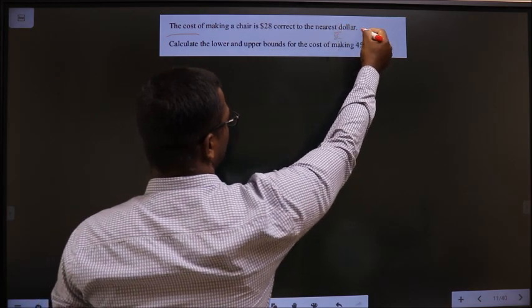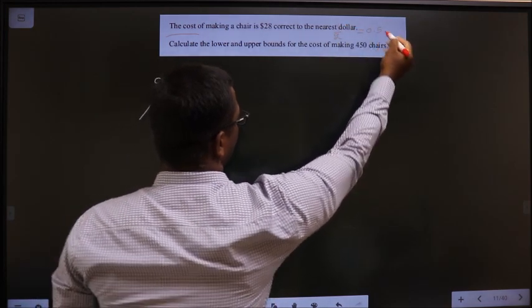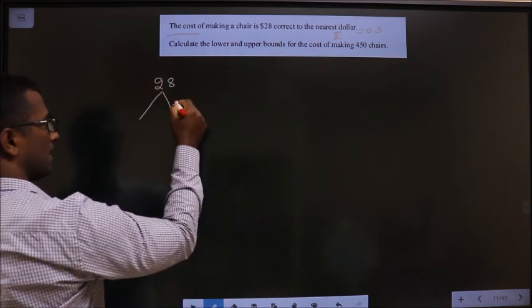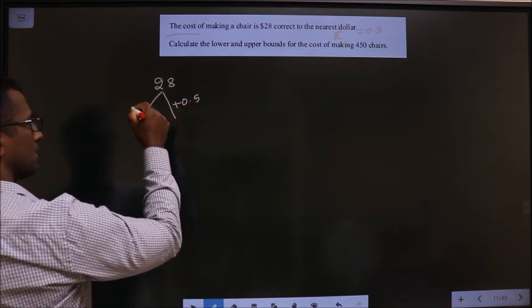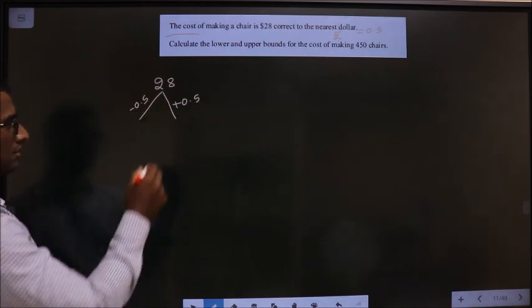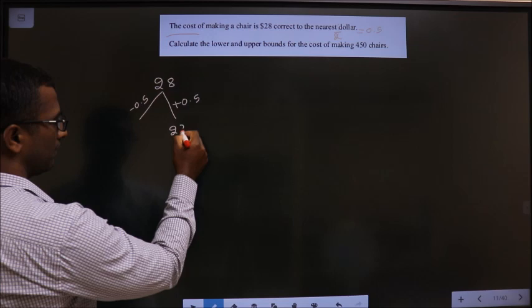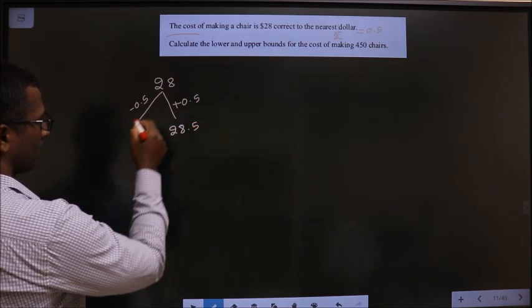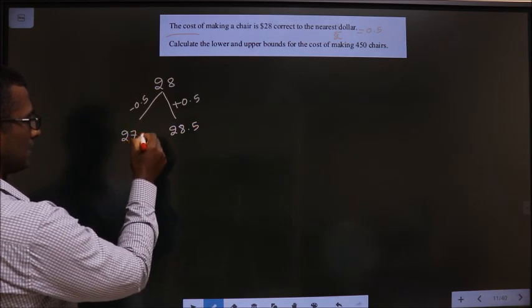So 2 by 2, we get 0.5. So add 0.5 and subtract 0.5 to get upper and lower bound. So when you add, you get $28.5. When you subtract, you get $27.5.